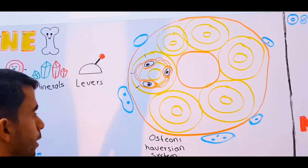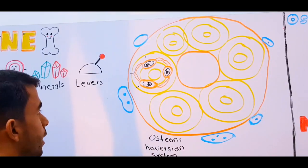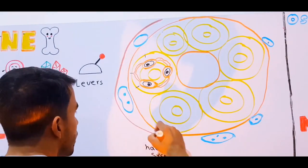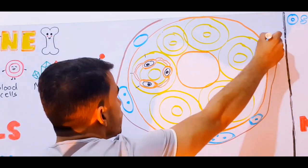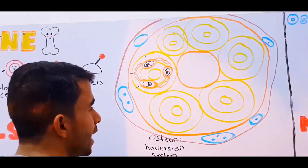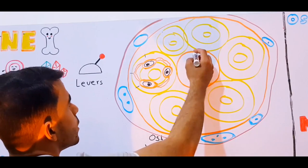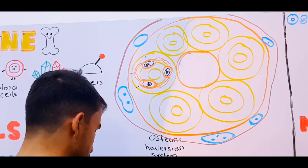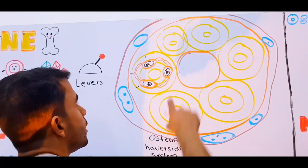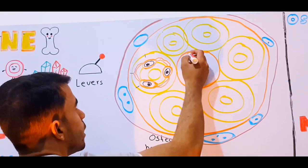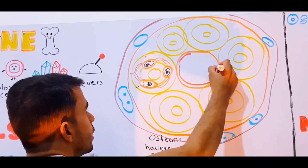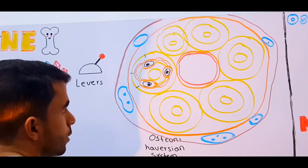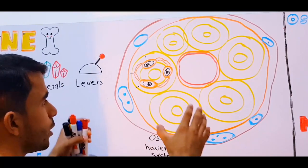This whole thing is covered via a lining called the periosteum on the outside, and from the inside the internal circumferential lamella is covered via the endosteum.